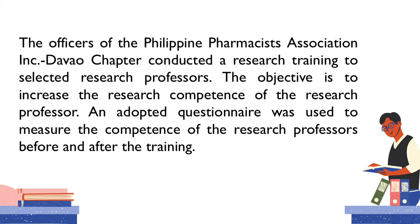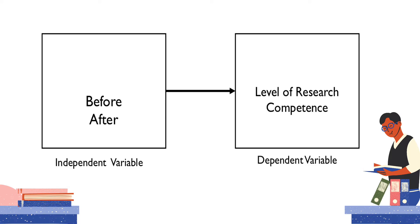To further understand the paired t-test, let us consider this study. The officers of the Philippine Pharmacists Association, Inc. conducted a research training for selected research professors. The objective is to increase the research competence of the research professors. An adapted questionnaire was used to measure the competence of the research professors before and after the training. For this type of study, we have two types of variables: the independent variable, which is before training and after training, and the dependent variable, which is the level of research competence of the research professors.